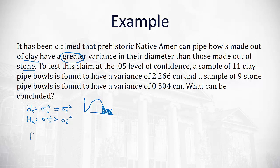So to calculate our F-statistic, we'll take the variance of the first group, and the first group is always the one that comes first in the hypothesis test. So the variance of the clay is 2.266, divided by the variance of the second group, the stone, is 0.504. Notice we did not have to square it in this example because we already have the variance. If we were given the standard deviation, we would have to square it, but not when we're given the variance. When we divide these, we're going to end up with 4.5 when I round to 2 decimal points.